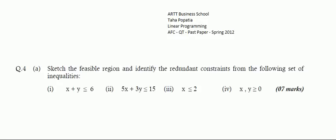The question says: sketch the feasible region and identify the redundant constraint from the following set of inequalities. A redundant constraint is a constraint or inequality which has no impact on our feasible region — its existence or non-existence will not change the feasible region.